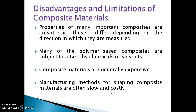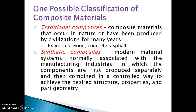There are many manufacturing methods for shaping composite materials, and they are often slow and costly. There are many different methods of preparation of composite materials. Some of them are the hand layup process, solid state fabrication process, squeeze casting, and powder metallurgy. So there are many different types of manufacturing methods.